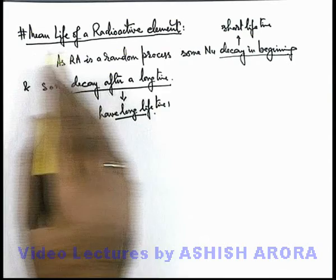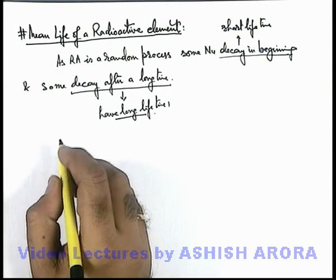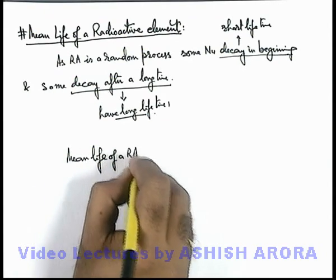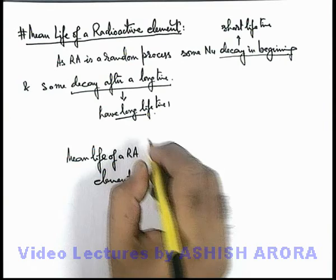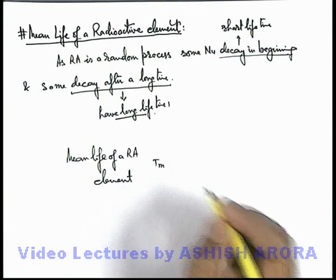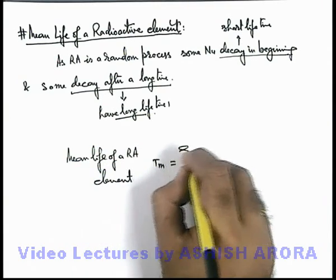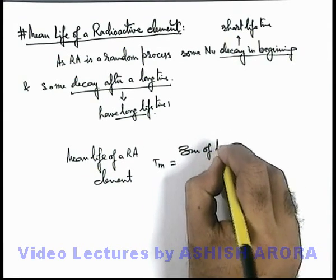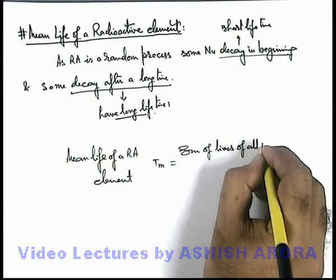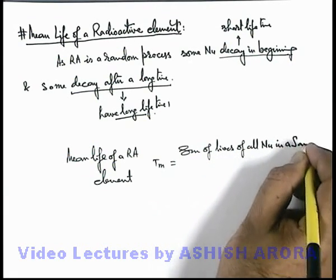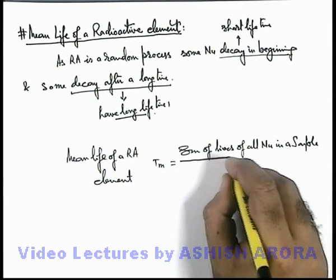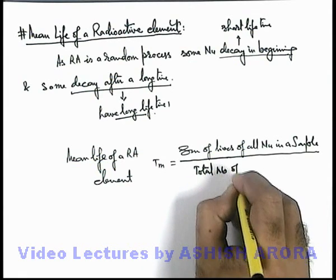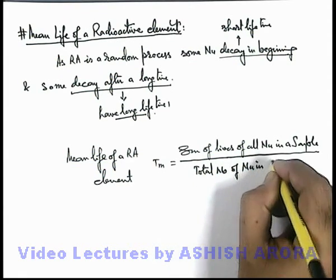As we are studying about mean life of a radioactive element, we can define the mean life, denoted by Tm. This can be written as the sum of lives of all nuclei in a sample divided by the total number of nuclei in that sample.